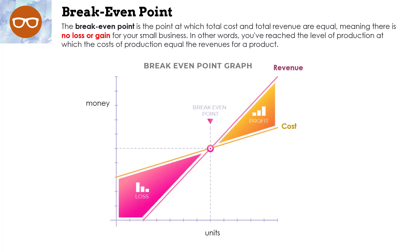Here's the graph. You're going to notice that on the y-axis we have money, and on the x-axis we have units. So for every unit, we have the money for our revenue. In the very center, we have what's called the break even point — that point is when we have no loss or gain. If we go to the left, we're going to notice the word loss. That means the cost line, which is in yellow, is more than the revenue line, which is in red.